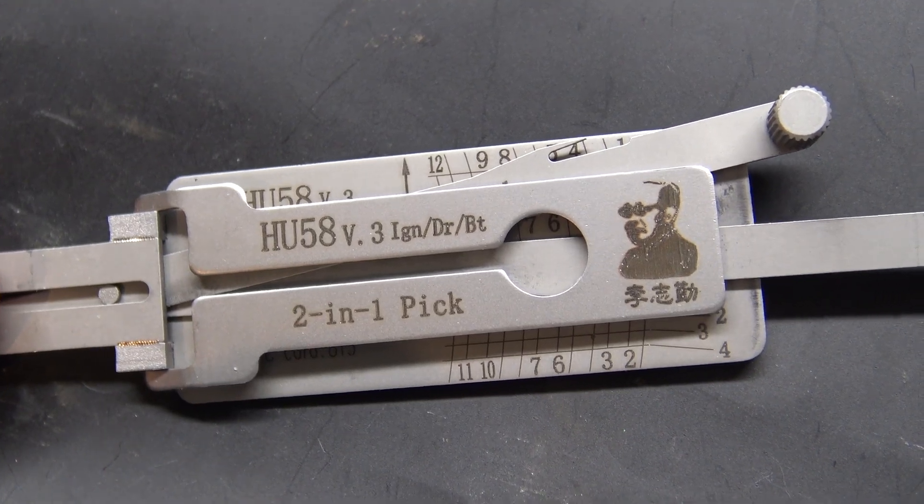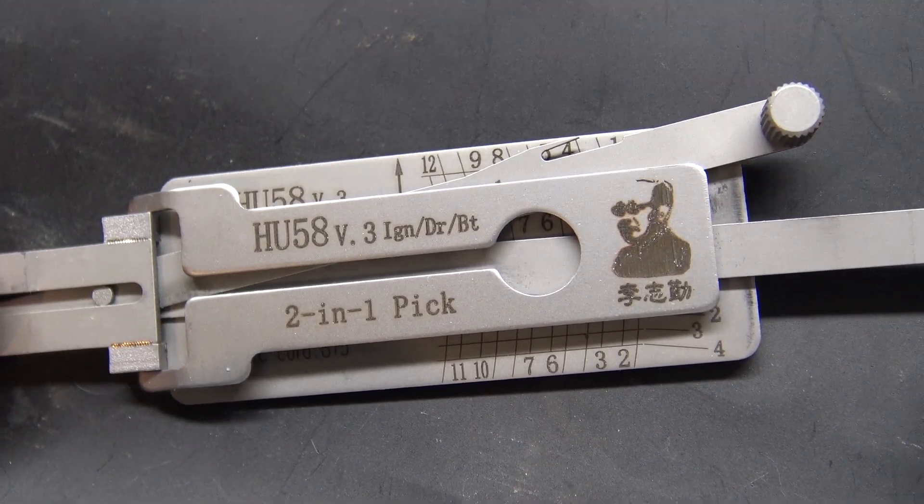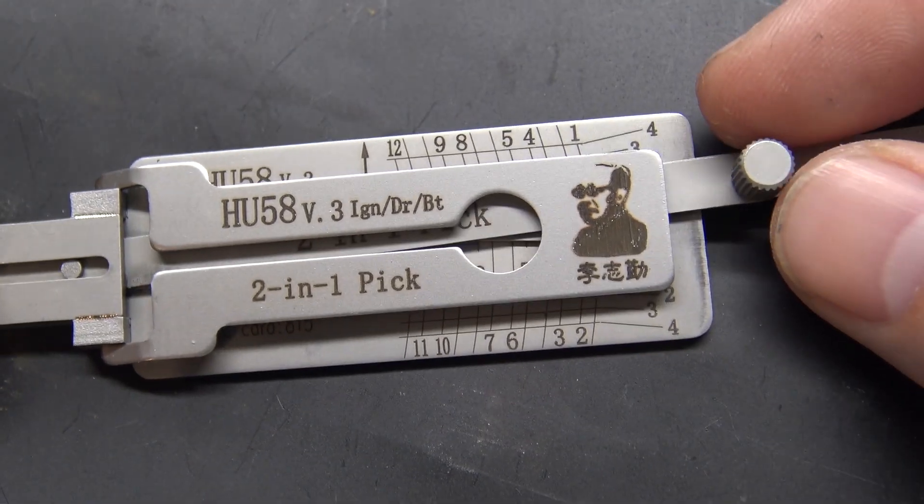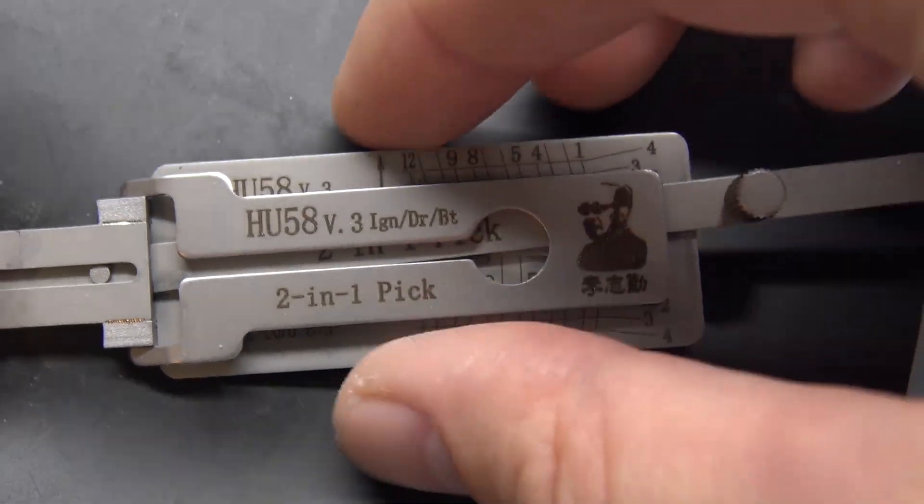Hey everybody. In this video we're going to do an in-depth look at the HU-58 twin lifter Lishi for old BMW locks.